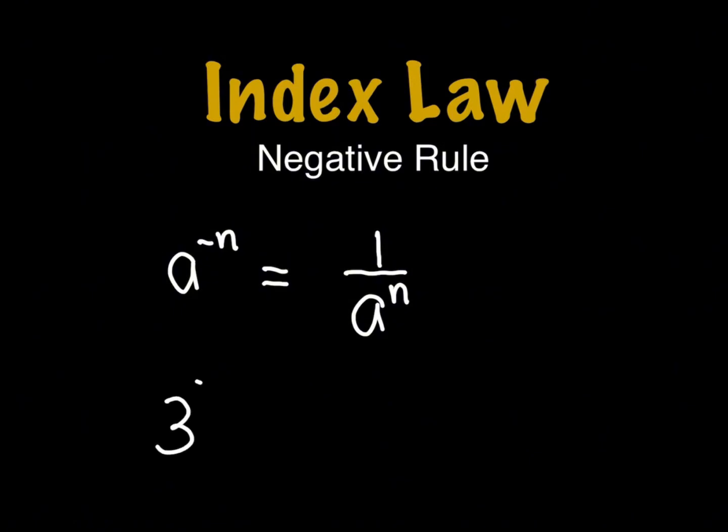So for example, if you have 3 raised to negative 8, that is equal to 1 over 3 to the 8th power.